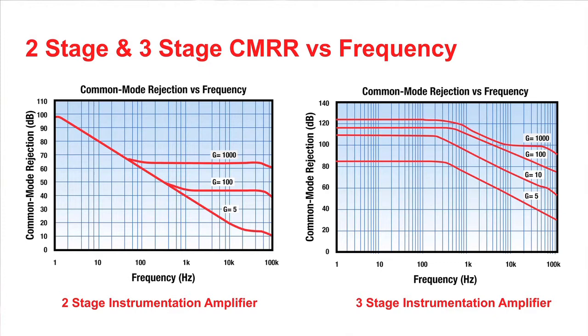The trade-off for a more limited frequency range is that the two-stage instrumentation amplifier with only two op amps instead of three uses less power than a three-stage instrumentation amplifier. Both two- and three-stage instrumentation amplifiers achieve high input impedance, high gain, and high CMRR.